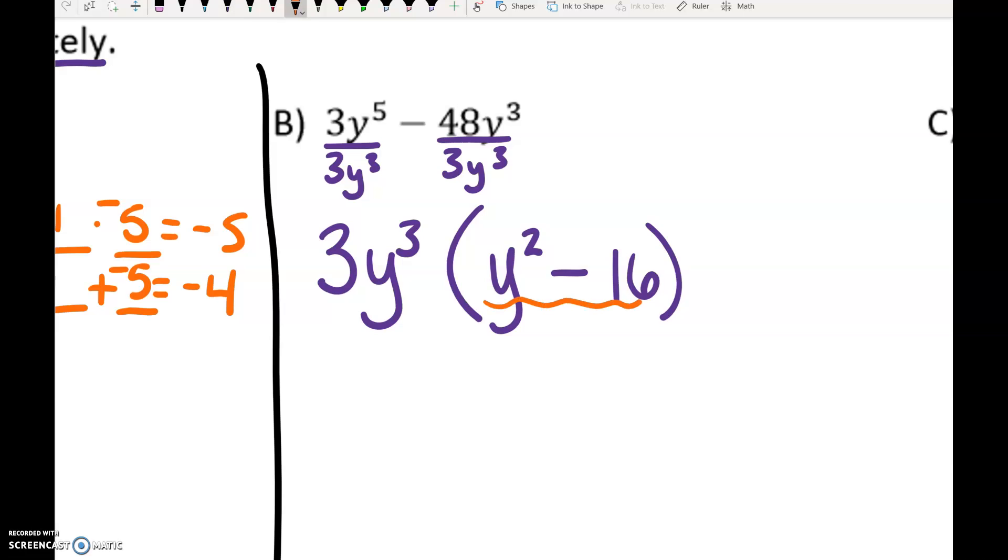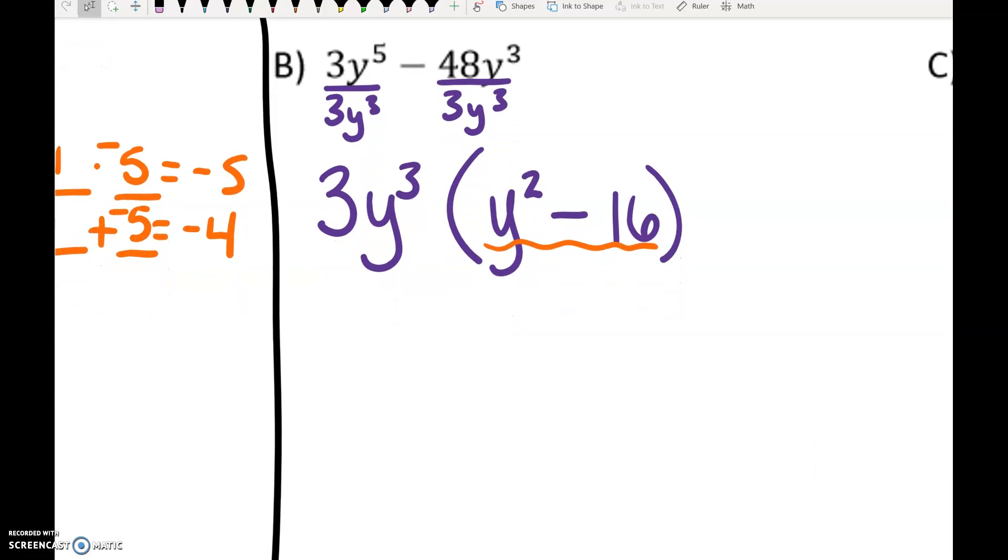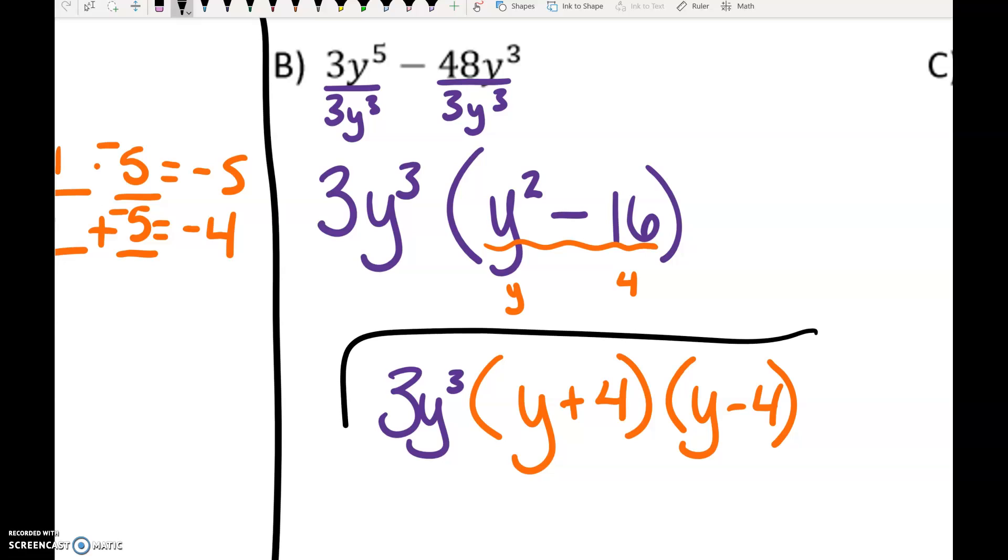Now we need to factor this thing. Does anybody remember how to factor y squared minus 16? Y squared is the perfect square of y, 16 is the perfect square of 4. So that part factors into y plus 4, y minus 4. And we have the 3y cubed in front. That is fully factored.